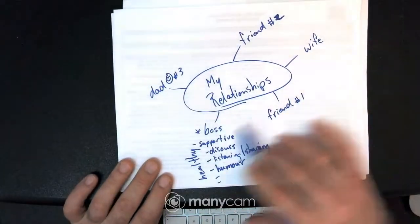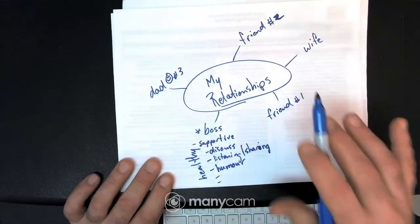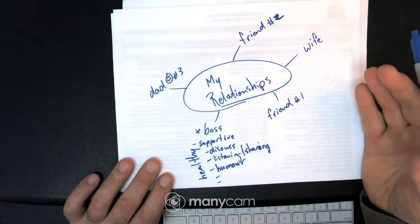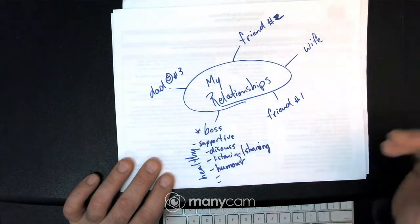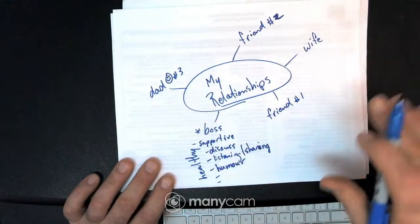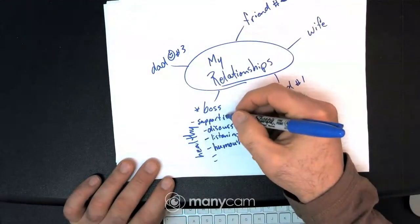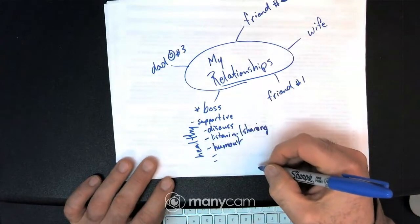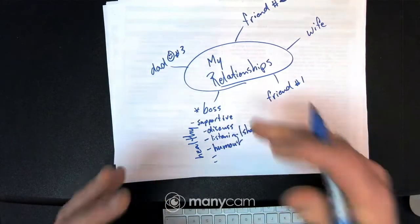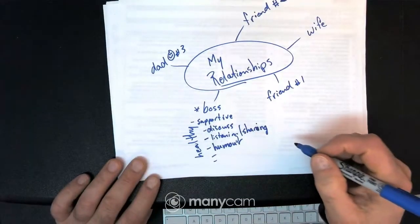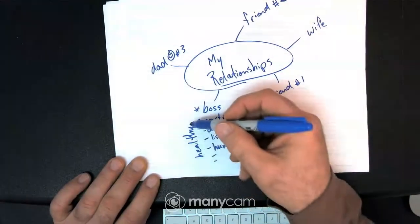So again, make sure you choose real people in your life because that will make this exercise valuable for you because you're actually thinking about your life, which is the idea of this assignment, but also this class. Try to identify as many aspects of that relationship as you can, so as many things about that relationship as you can, and then at the end, decide whether it's healthy or unhealthy. See you.